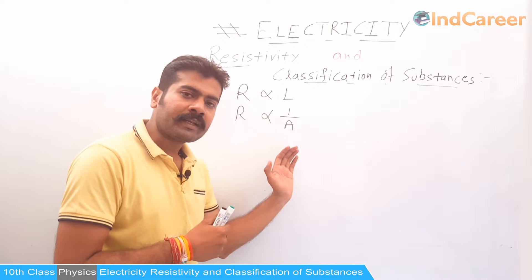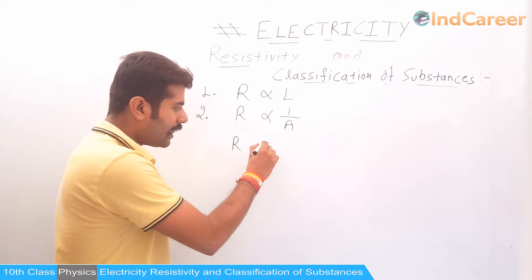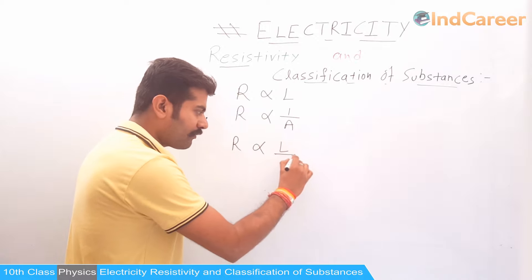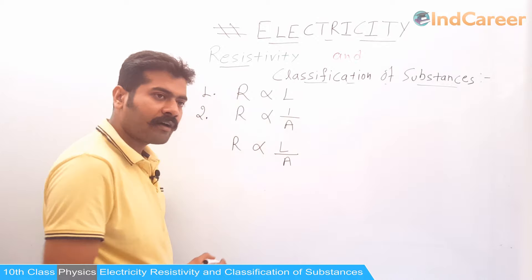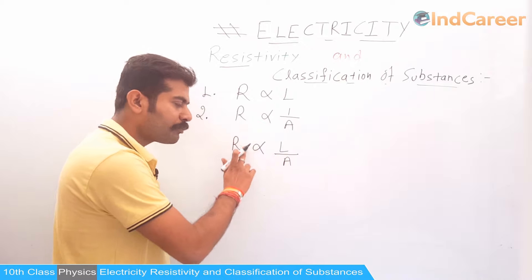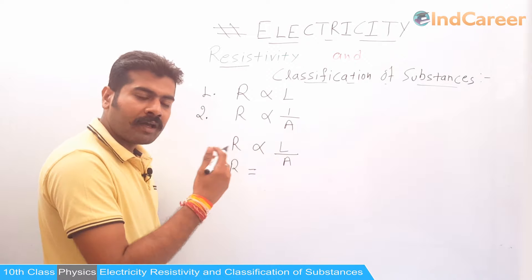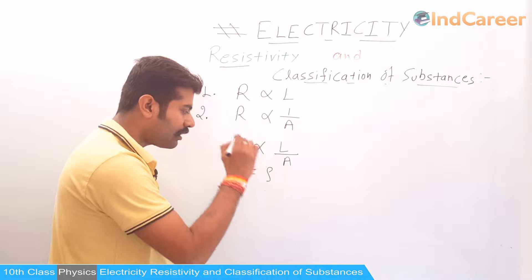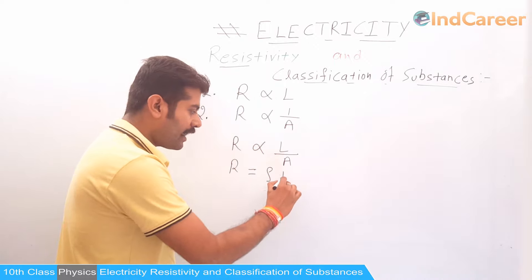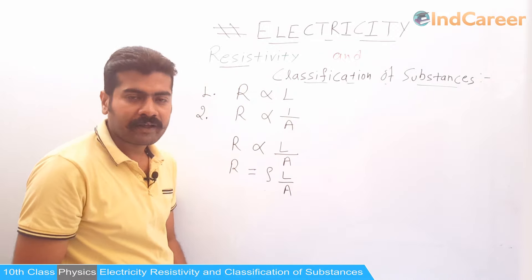Can we combine both these equations? If we combine them, we get R is directly proportional to L, the length of the conductor, as well as inversely proportional to the area of cross-section. If we remove the proportionality sign, we need to multiply by a constant, which we call Rho.